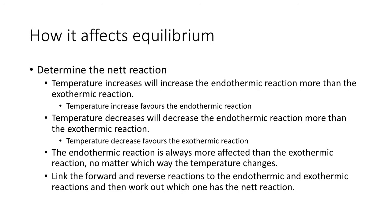Once you've recognized that an increase or decrease in temperature changes both rates, you then have to work out which one changes more to determine which reaction is favored. If you have a temperature increase, you will increase the endothermic reaction more than the exothermic reaction. So a temperature increase favors the endothermic reaction. If it's a temperature decrease, both will decrease, but the endothermic reaction decreases more than the exothermic — which then favors the exothermic reaction. A simple way to remember this: the endothermic reaction is always more affected than the exothermic reaction.